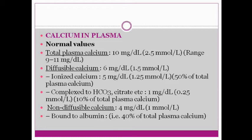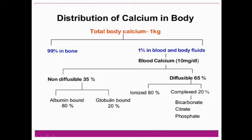The calcium found in plasma — total plasma calcium is 10 milligram per deciliter, with a range of 9 to 11 mg/dL. It is divided into two forms: diffusible calcium, which is complexed with bicarbonate, citrate, etc., and non-diffusible calcium which is bound to albumin. The blood calcium is divided into the non-diffusible form bound mainly to albumin, and the complex form with bicarbonate.